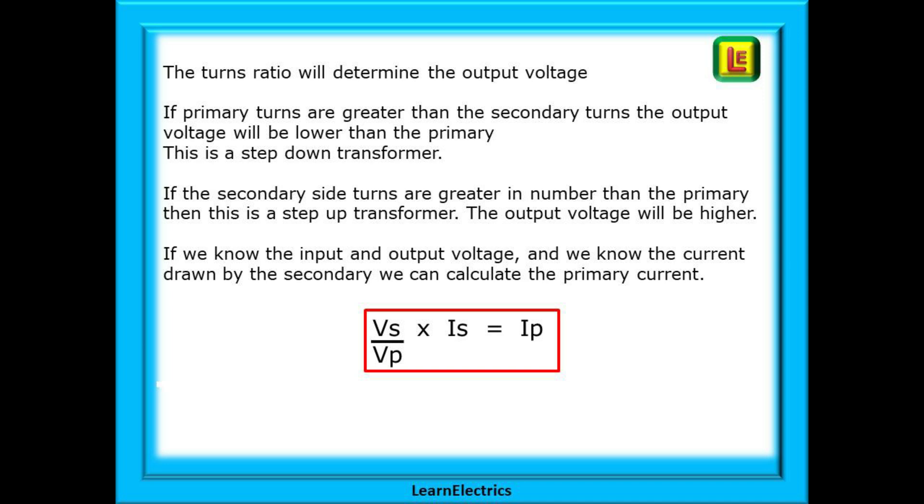Let's have a short recap on what we've just done. The turns ratio will determine the output voltage. If the primary turns are greater than the secondary turns, the output voltage will be lower than the primary. This is called a step-down transformer and is most commonly used for lighting. If the secondary side turns are greater in number than the primary, then this is a step-up transformer, and the output voltage will be higher.